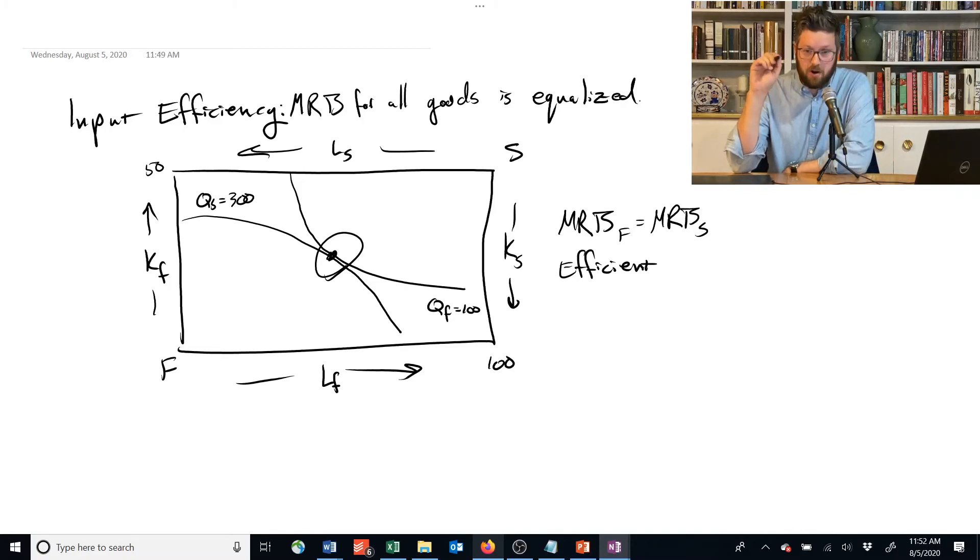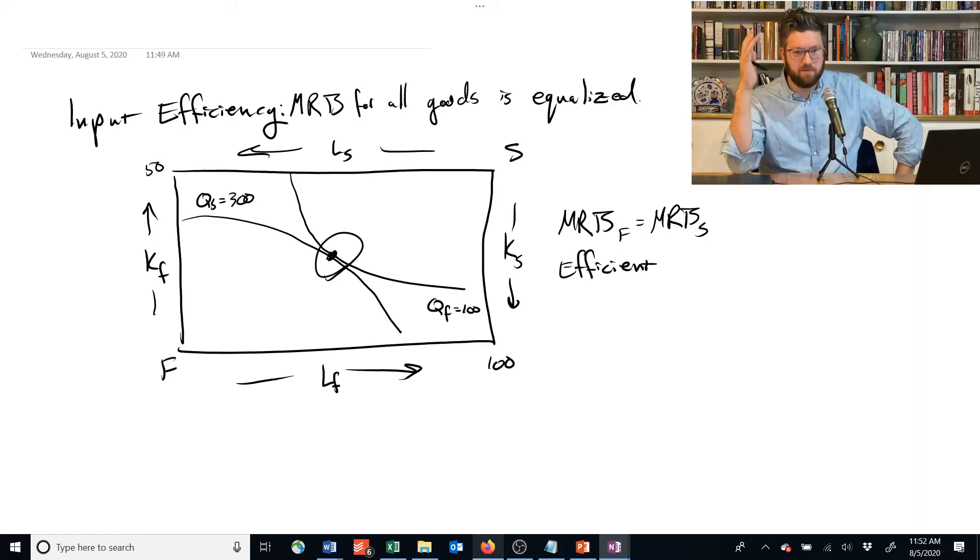As long as the marginal rate of technical substitution for producing each of those goods is equalized, then we're on the production possibilities frontier and we can't make more of one of those goods without making less of another one. So this input efficiency ensures that this society has the maximum amount of food and shelter that it can now figure out how to disperse among the people. And that's what we'll talk about in the next video.